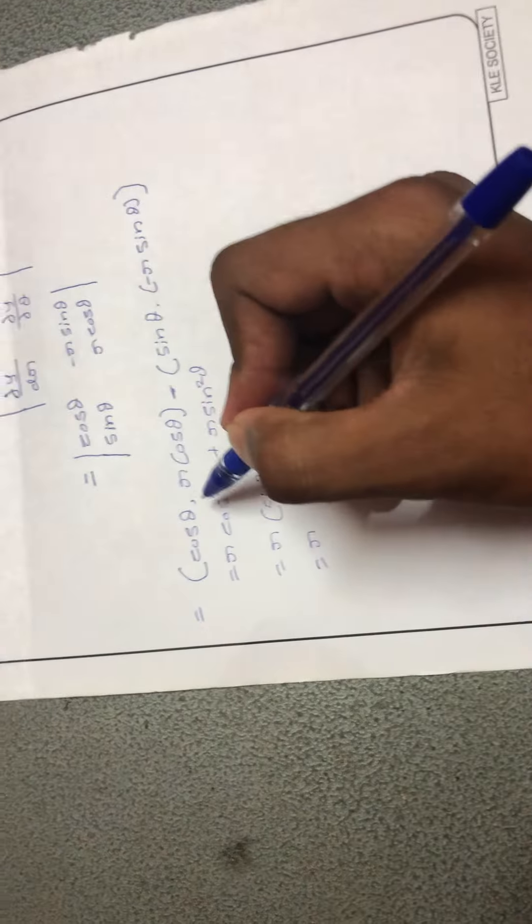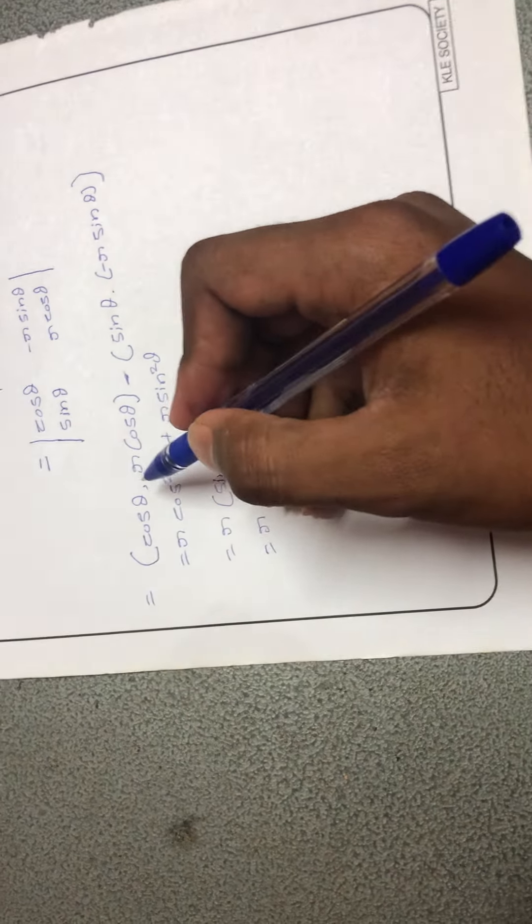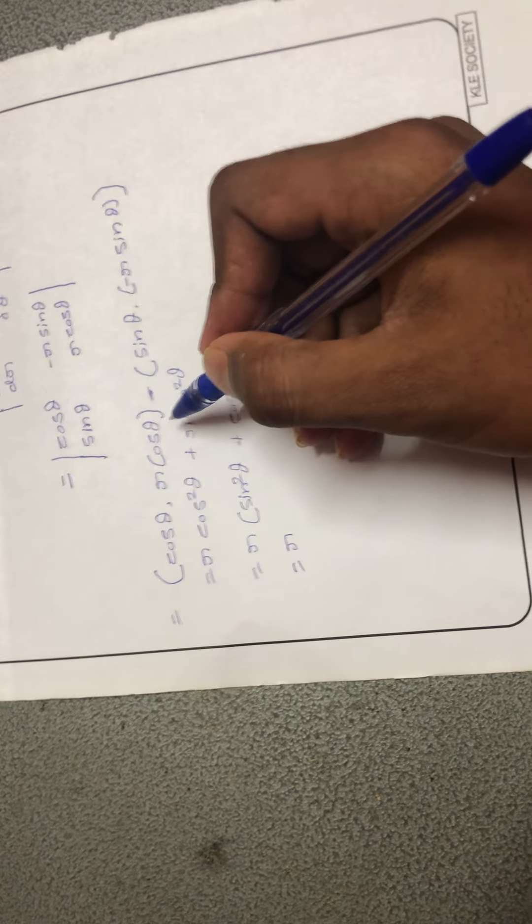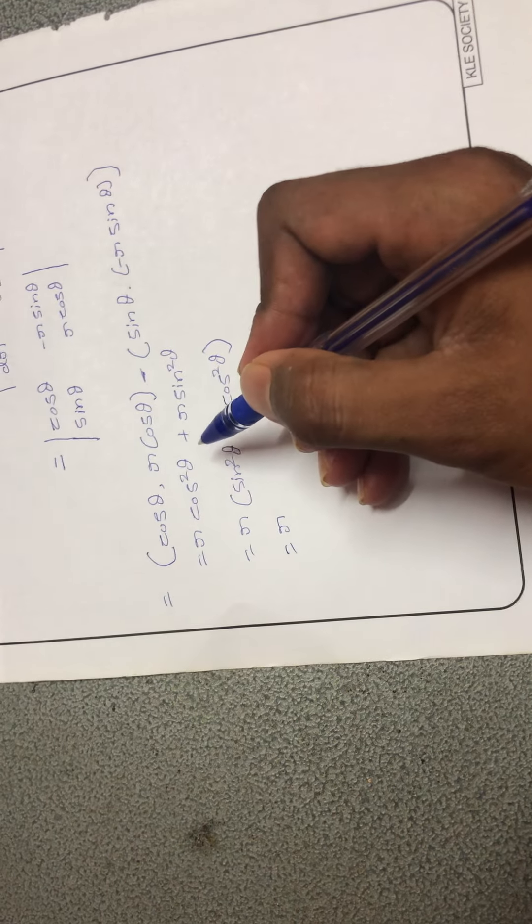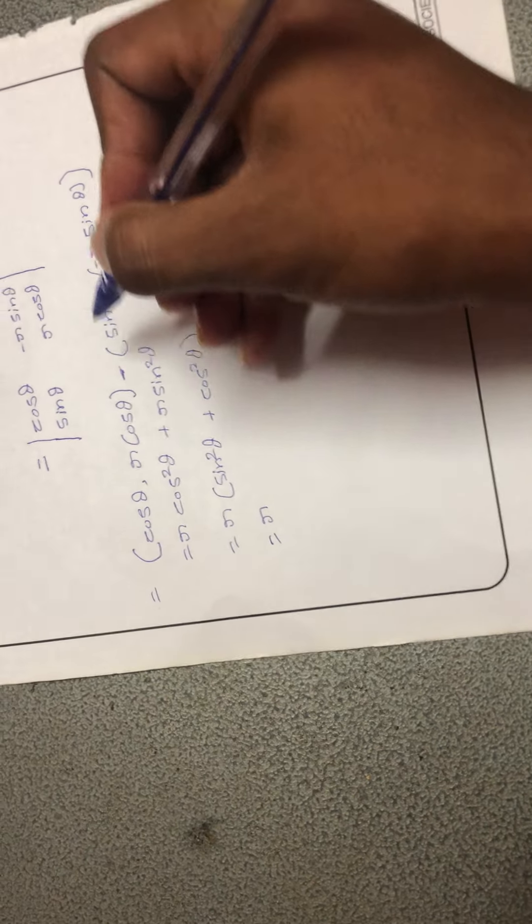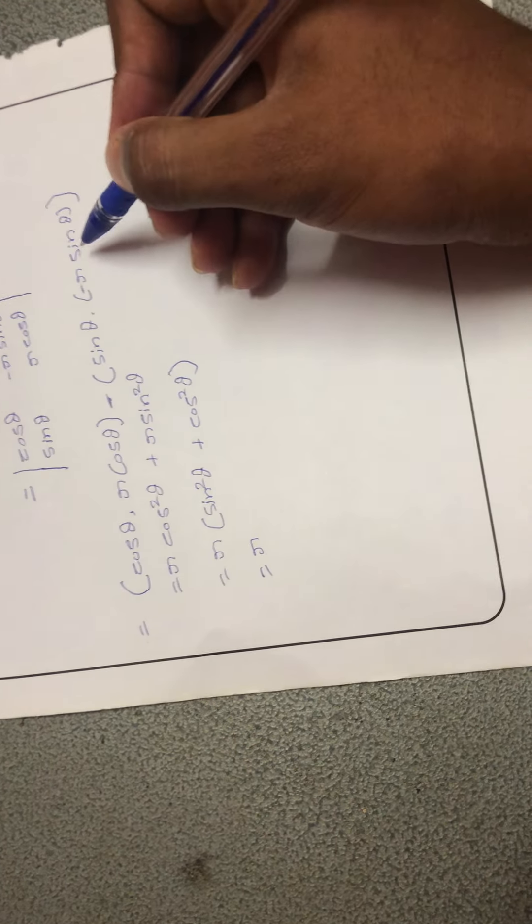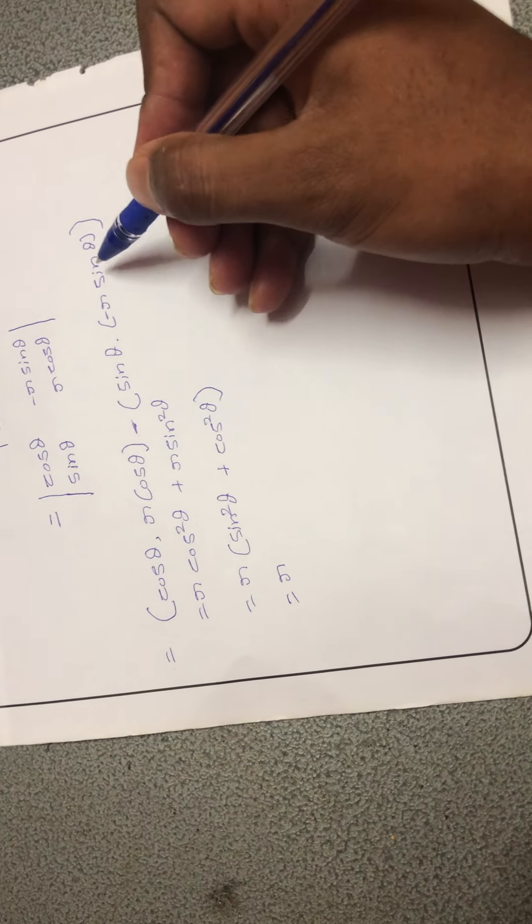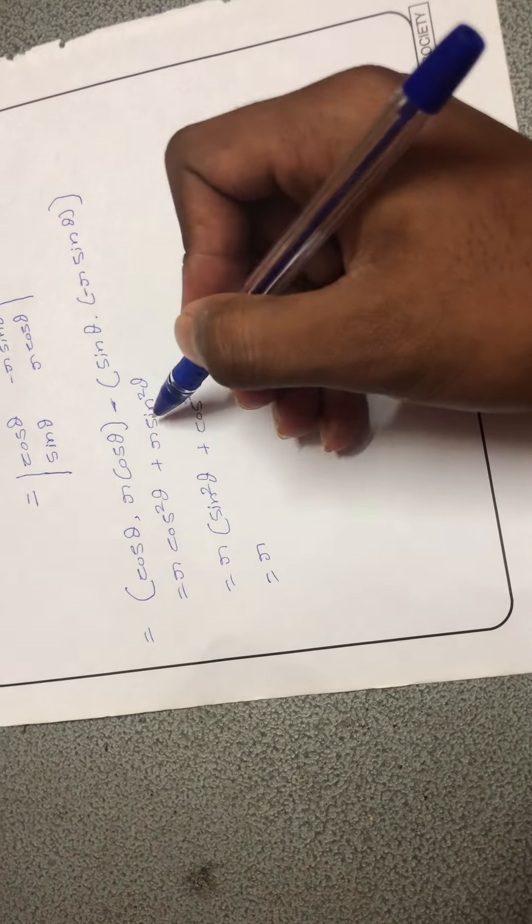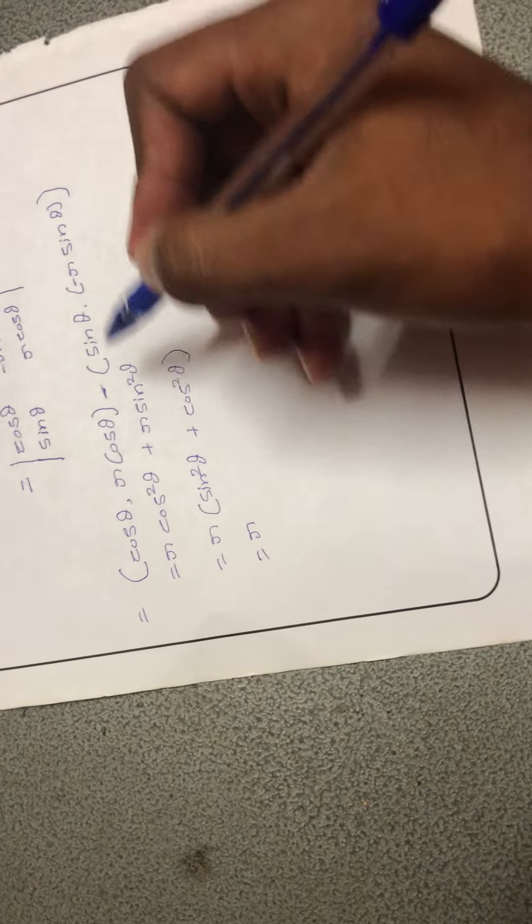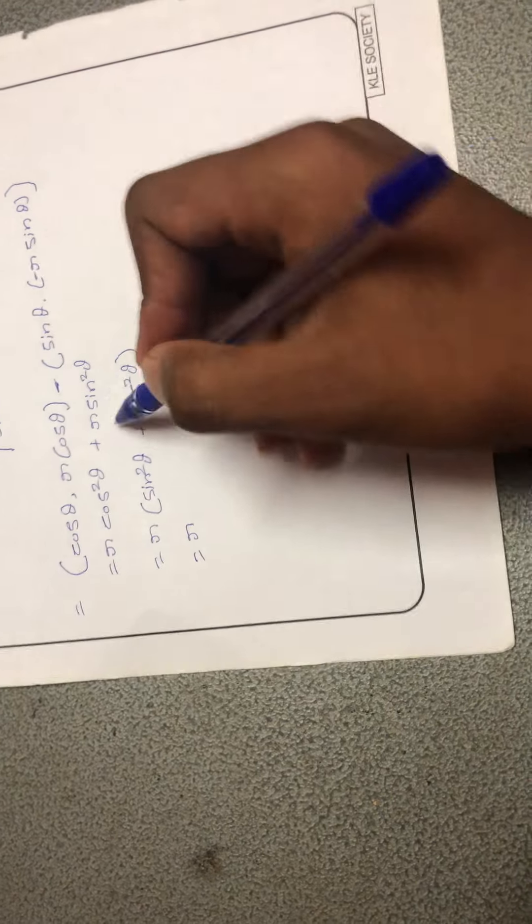Then we simplify this: cos theta into r cos theta becomes r cos square theta. And here we have minus and here we have minus, it becomes plus. Sin theta sin theta into r sin theta, we get r sin square theta.